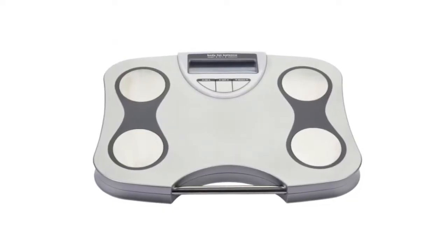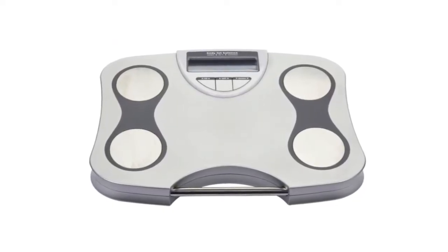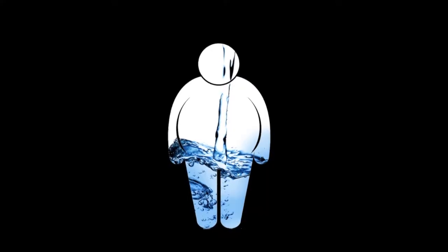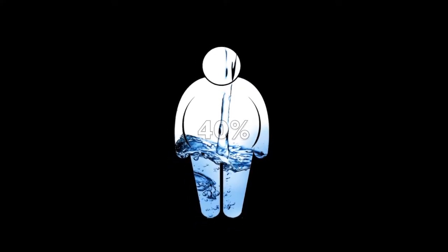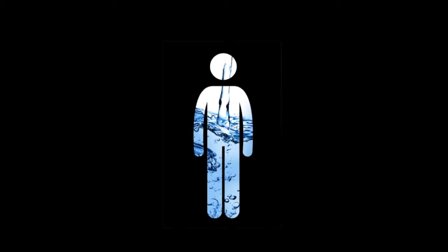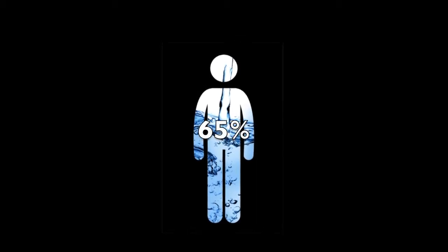When using an electronic scale that can measure water percentages, it can be seen that an overweight person can have as little as 40% water in their bodies. A thinner person, however, will typically be at or around 65% water.